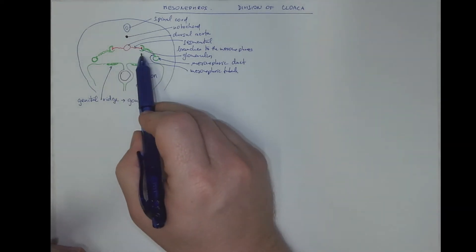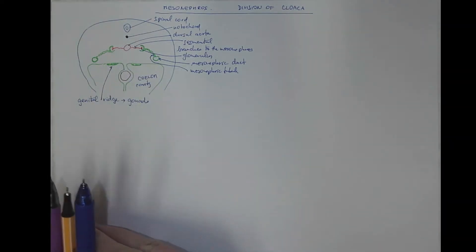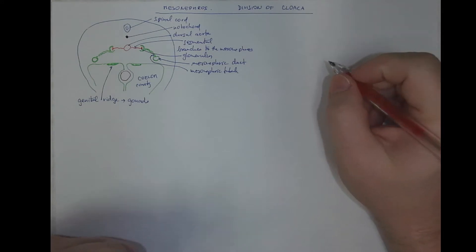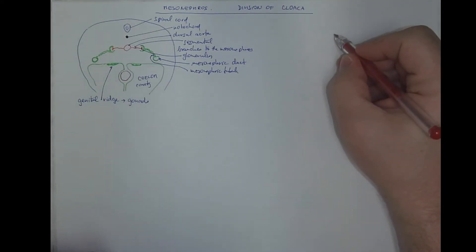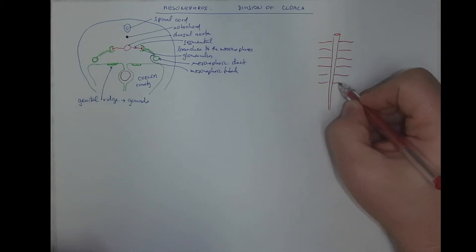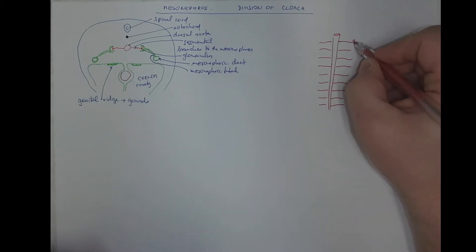If this is the cross-section, how does the frontal view look like of the same structure? This would be the aorta, the dorsal aorta. It has the segmentally arranged lateral branches to the mesonephros. The mesonephros is a large and long organ, and we got the capillary loops on the end, the glomeruli.